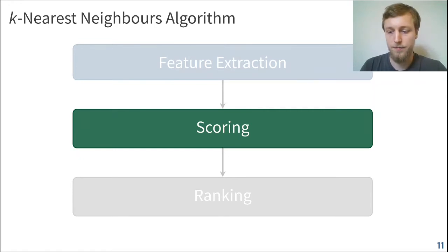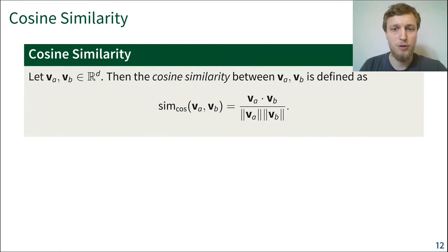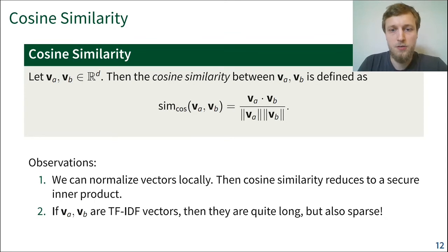Here, a quick recap. We want to have a measure of similarity between two feature vectors, and now these feature vectors will be TF-IDF vectors. The standard approach here, again, is cosine similarity, which is defined as follows. It's the inner product of the two vectors divided by the product of the length. Now, two observations we can make here. First, we can normalize the vectors locally, so that way the cosine similarity simply reduces to a secure inner product. Secondly, the vectors, if they are TF-IDF vectors, then they will be very long. So they will have length of the size of the vocabulary, but also very sparse, because words that do not appear in a single document will have a value of zero. And we're going to make use of that sparsity to speed up our secure inner product.